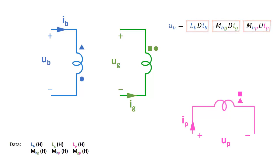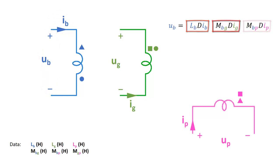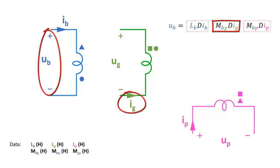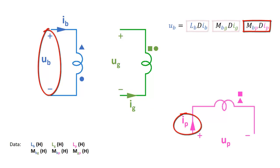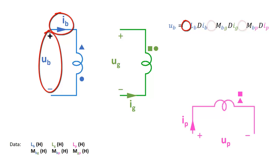But what does each term represent? The first term represents the voltage drop in the blue coil when a current that is varying along the time enters this coil. The second term represents the voltage drop in the blue coil when a varying current passes through the green coil. Now we have to add the signs of each term. For the first term we have to look at the blue current and the blue voltage. As you can see, the blue current enters the plus sign of the blue voltage, so we can assign a plus sign to the first term. Otherwise, if the blue current entered the minus sign of the blue voltage, we would put a negative sign in the first term.